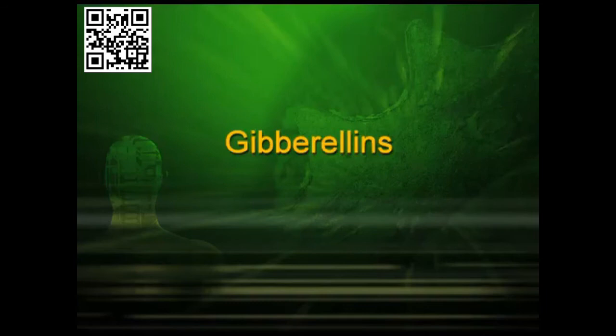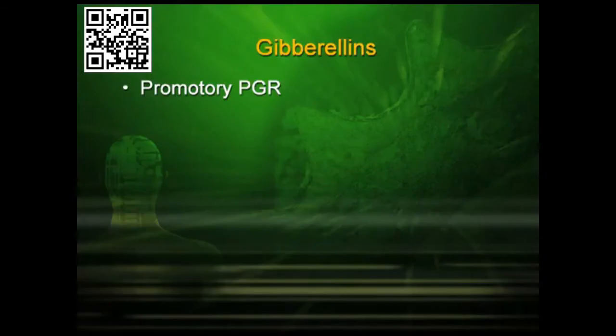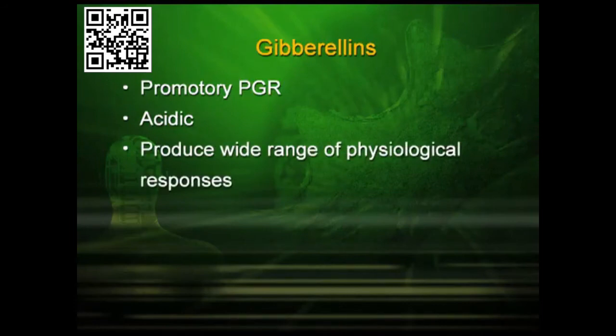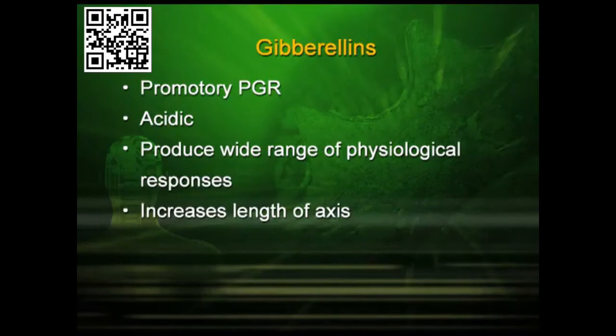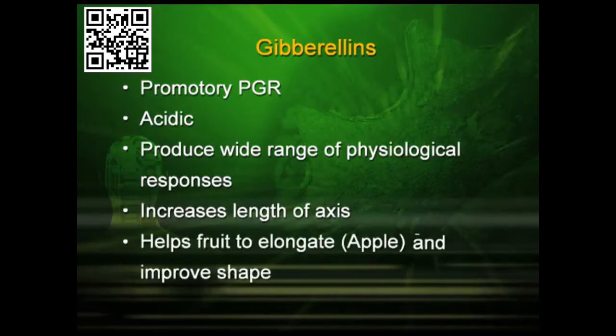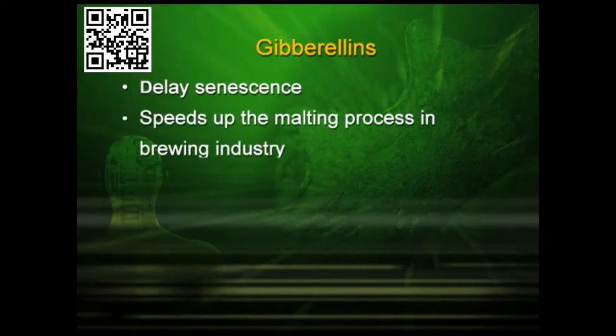The second PGR is gibberellins — also a promotory PGR and acidic in nature, which is why we call it gibberellic acid (GA). It produces a wide range of physiological responses in plants. It increases the length of axes and is used in grape plants to produce larger bunches. It helps fruits to elongate — for example, making apples more elongated for a better shape. It delays senescence, speeds up the malting process in the brewing industry, and increases the length of stem in sugarcane, raising sugar output by about 20 percent.